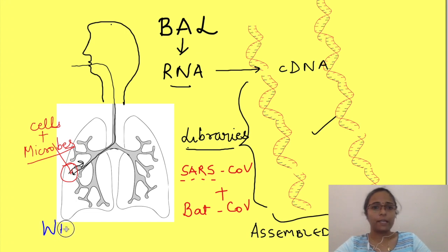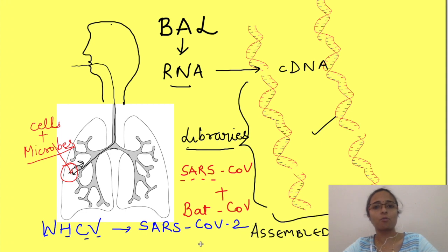It was initially named as WHCV, i.e., Wuhan human 1 coronavirus, but now international committee on taxonomy of viruses has named the virus as SARS-CoV-2, i.e., severe acute respiratory syndrome coronavirus 2, and the disease which it causes as COVID-19.